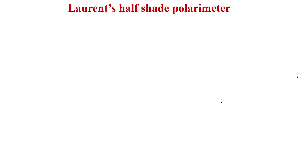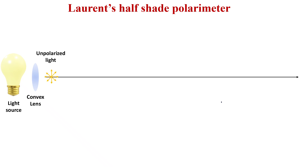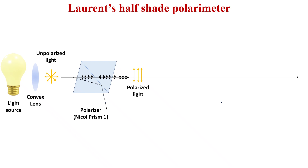The information gathered about polarization of light finds application in the Laurent half-shade polarimeter. In its construction, there is a light source followed by a convex lens. The unpolarized light from the source is passed through Nicol prism number 1, which acts as the polarizer, converting unpolarized light into polarized light. Next is the half-shaded plate — a glass plate where half is covered and half remains as plain glass.